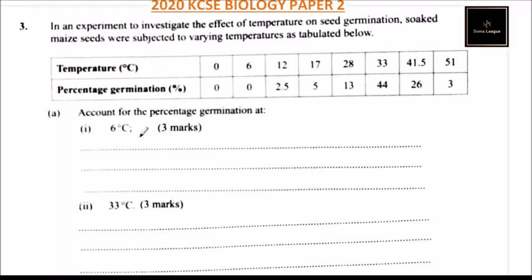This is question number three. We are told in an experiment to investigate the effect of temperature on seed germination, soaked maize seeds were subjected to varying temperatures. The data shows temperature in degrees centigrade: at zero, germination was 0%; at 6, still 0%; at 12, 2.5%; at 17, 5%; at 28, 13%; at 33, 44%; at 41.5, 26%; at 51, 3%.